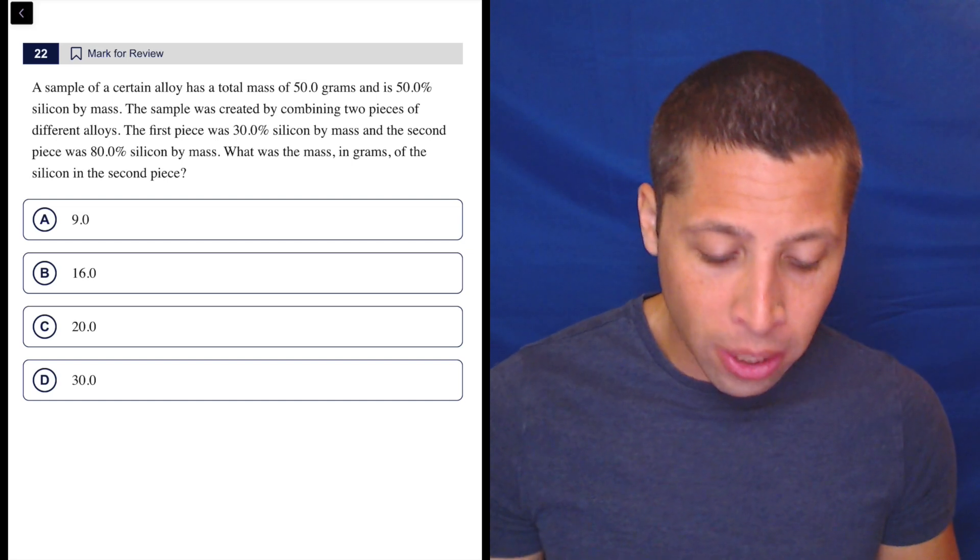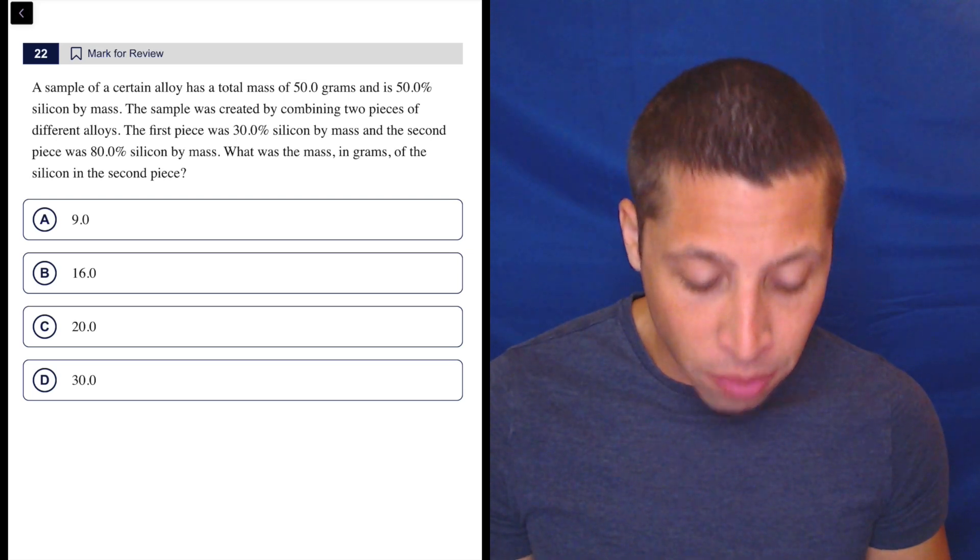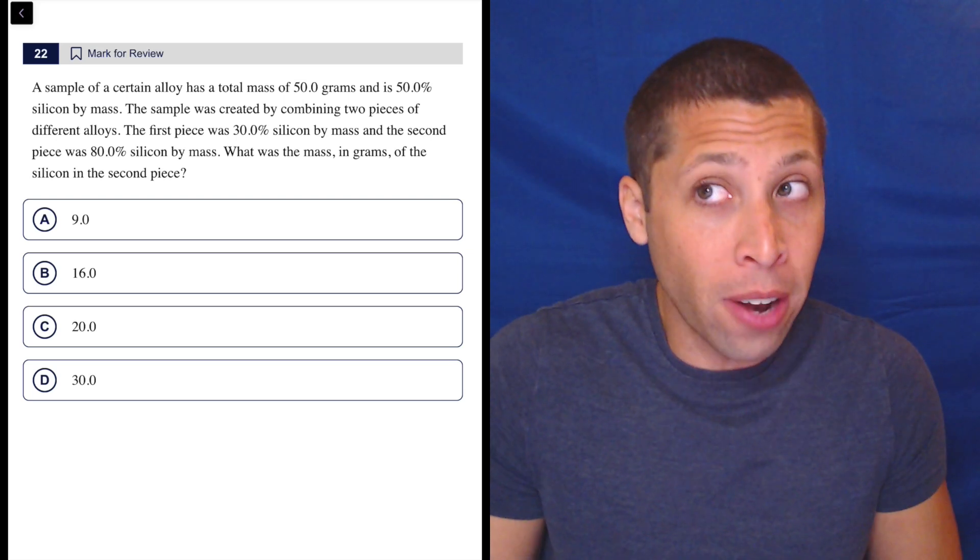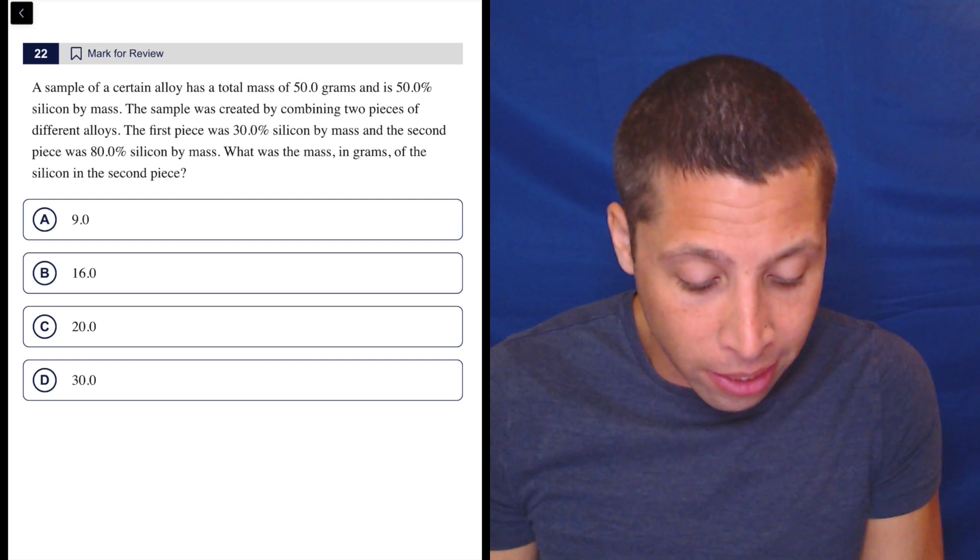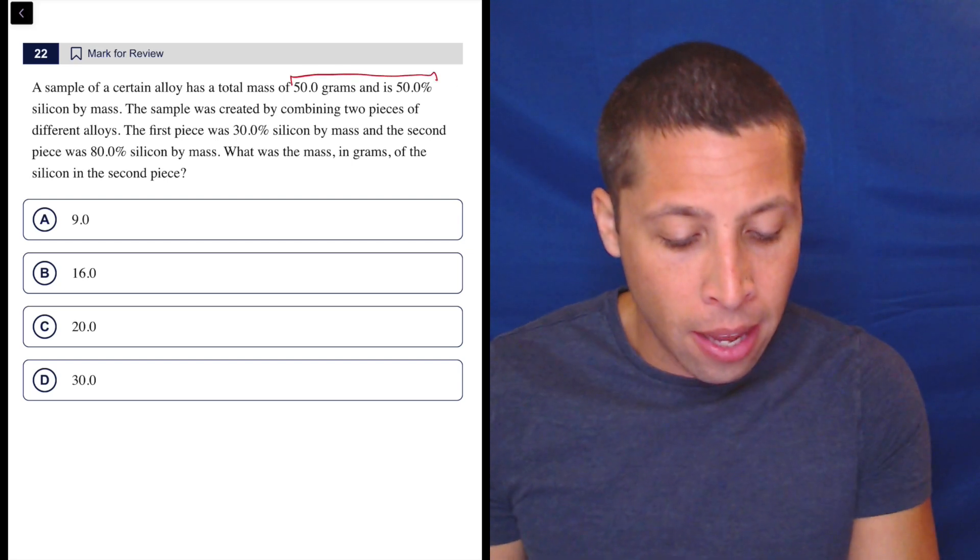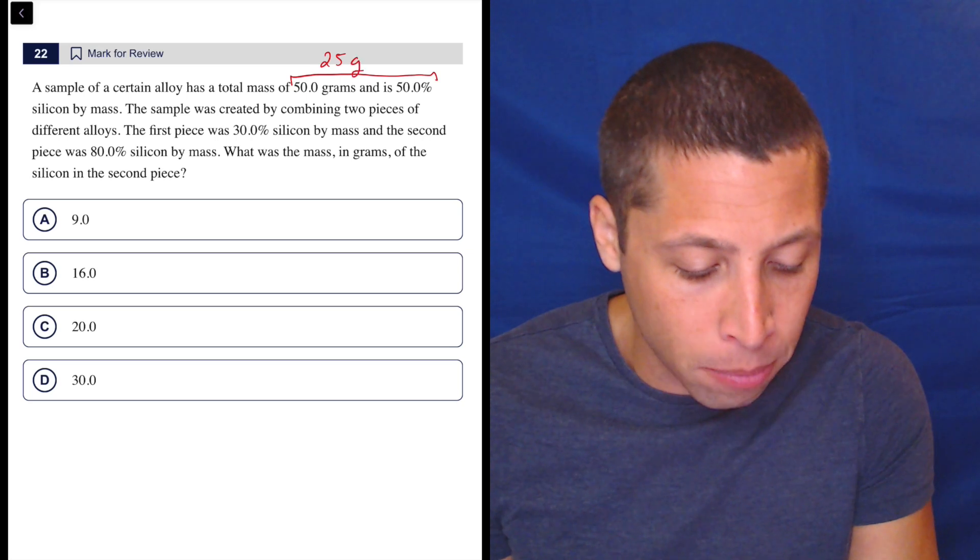A sample of a certain alloy has a total mass of 50 grams and is 50% silicon by mass. Well, there's an instruction there. They're not saying do this, but basically, if it's 50 grams and 50% is silicon, that means it's 25 grams of silicon.